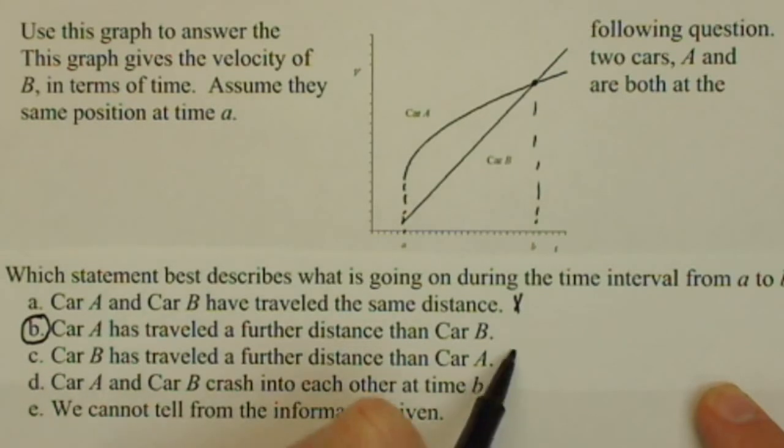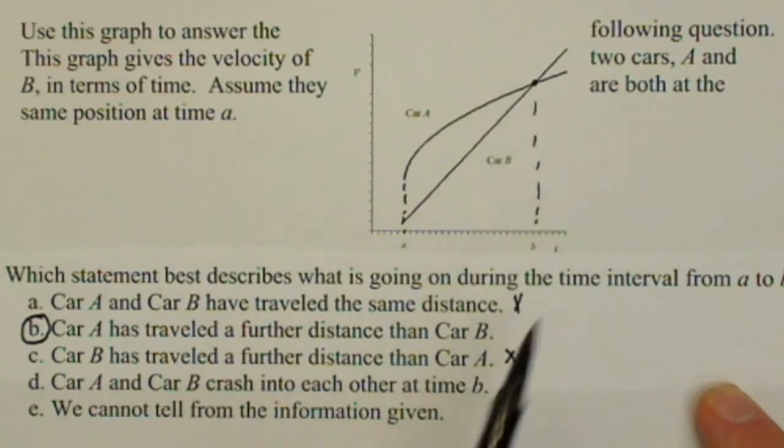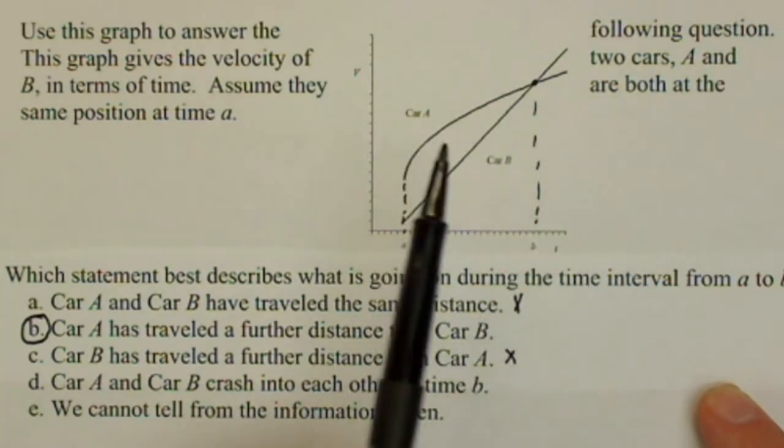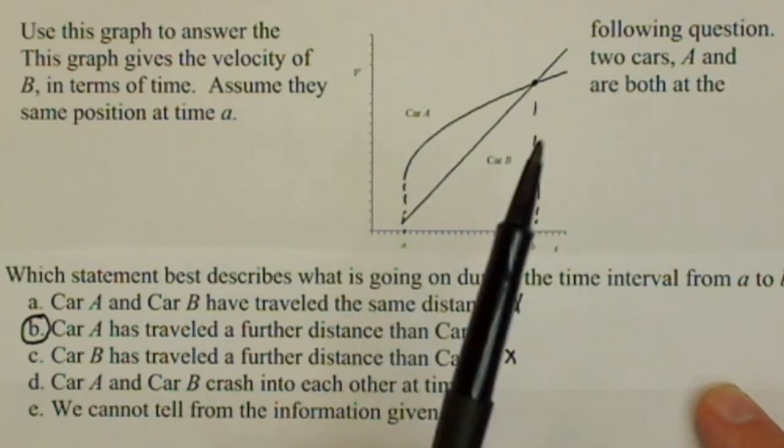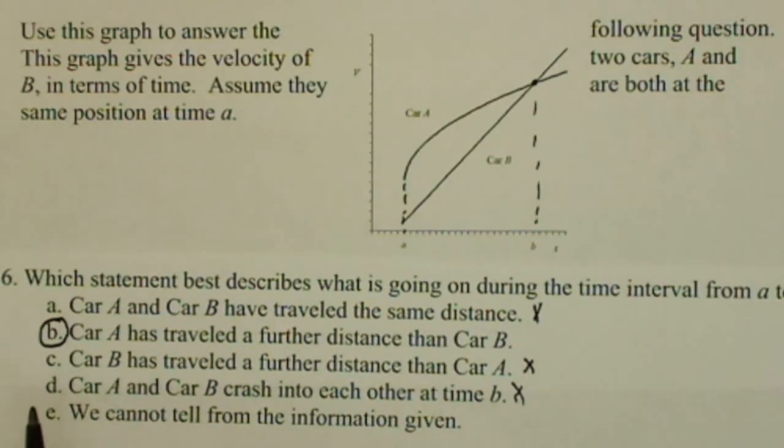Let's just check the rest. C we now know to be false because of what we discussed in part B. Car A and car B crash into each other at time B. Some people think that because the two lines cross each other. But remember, this just talks about their velocity. It doesn't talk about where they are. They don't even need to be traveling down the same road to be able to be graphed. So, we have no idea if they crash into each other. And we cannot tell from the given information. Well, as we discussed, we can tell that car A has traveled further than car B.